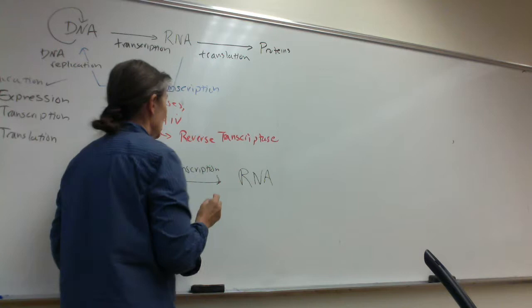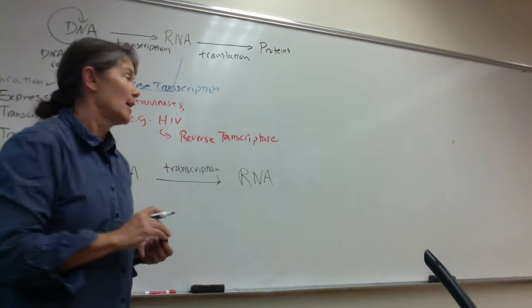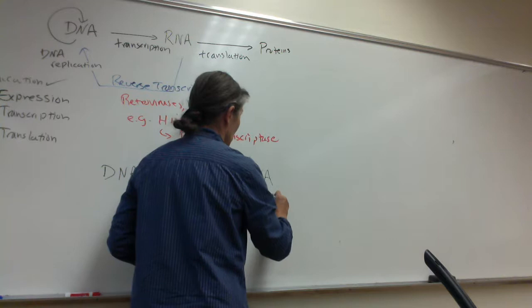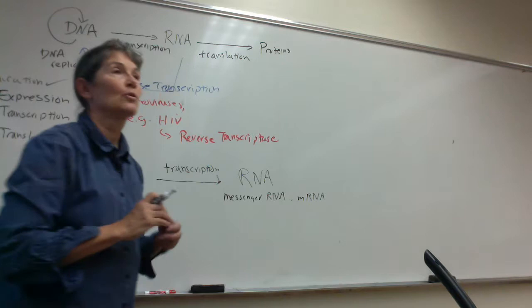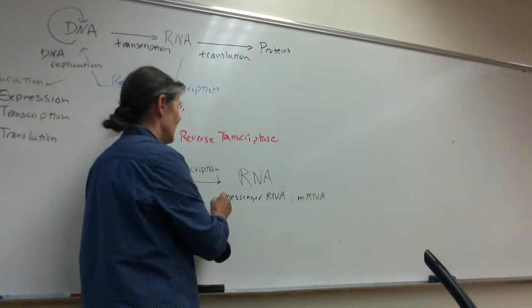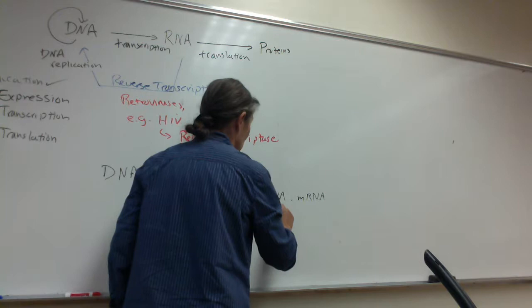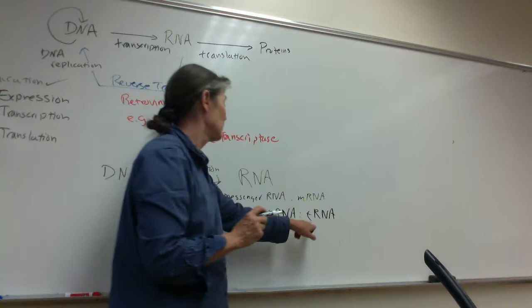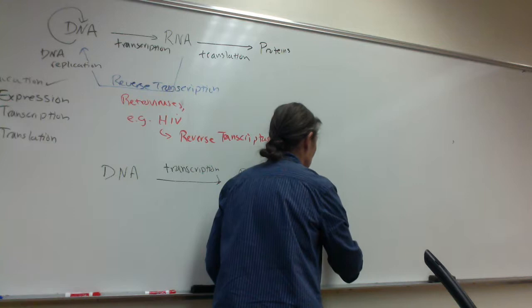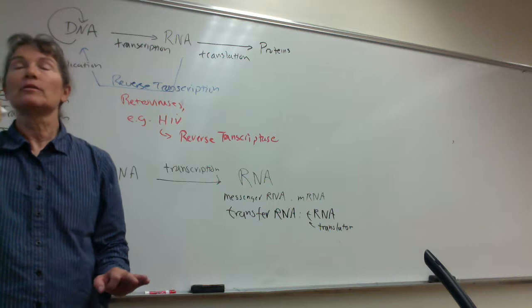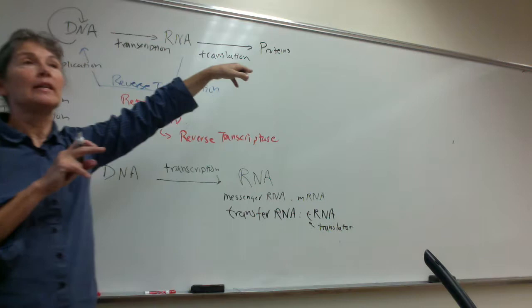Specifically, I want to talk about three transcription products. The three transcription products are: messenger RNA or mRNA; transfer RNA or tRNA — I like to remember the T also means 'translator' because tRNA is literally the translator molecule, able to read the nitrogenous base alphabet of nucleic acids and also the amino acid alphabet of proteins; and ribosomal RNA or rRNA.